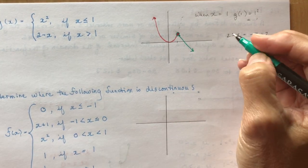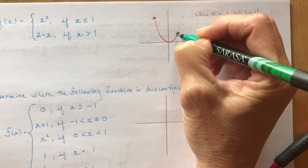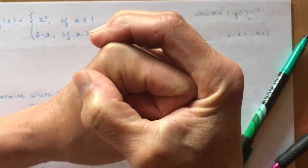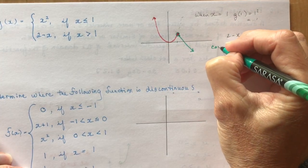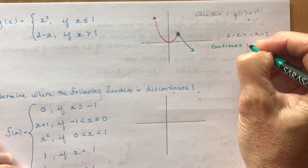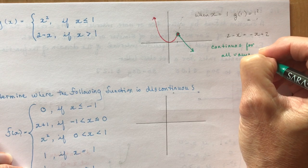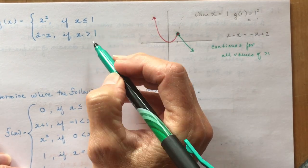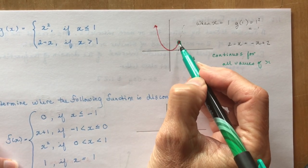Is this function continuous? The parabola came down to (1, 1) with a solid circle, and the line also approaches (1, 1) with an open circle — the solid circle covers the open one. So the function is continuous for all values of x. The point (1, 1) got sealed in.